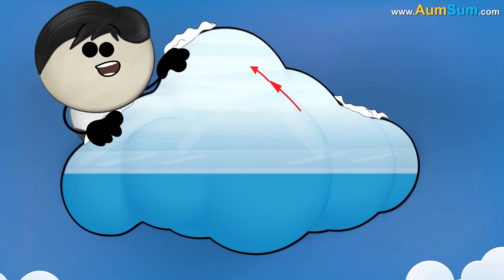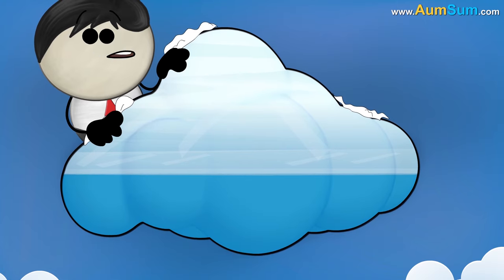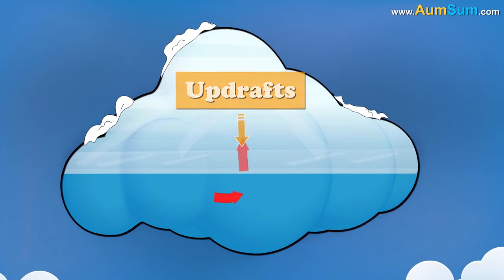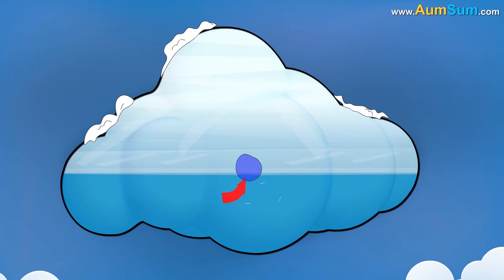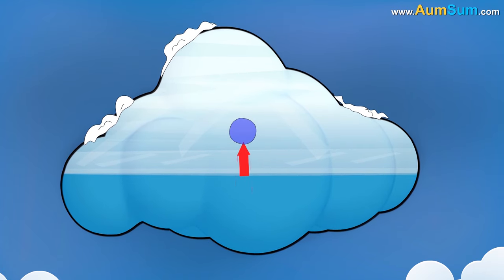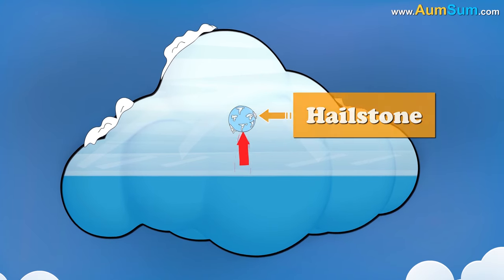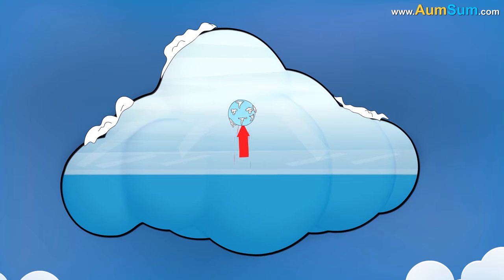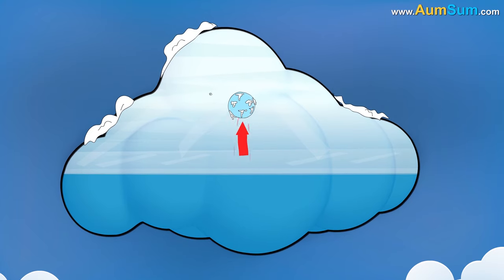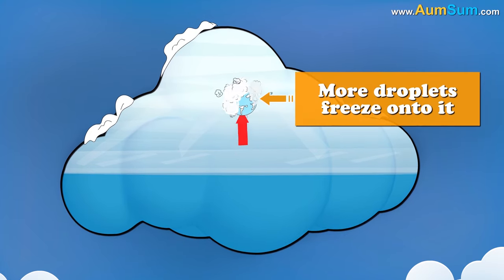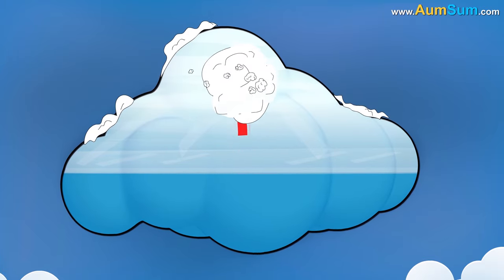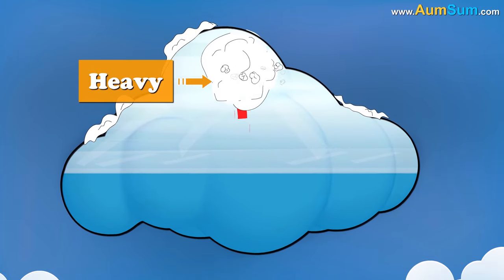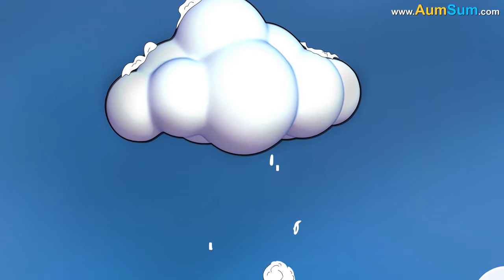Now, according to a recent study, hail begins to form when updrafts lift upwards the water droplets present at the bottom of the cloud. As they ascend, the freezing temperatures cause the droplets to turn into tiny hailstones. Then, as the updrafts push these hailstones even higher, more droplets freeze onto them, creating larger hailstones. Eventually, when these hailstones become too heavy for the updrafts to hold, they fall, causing hail.